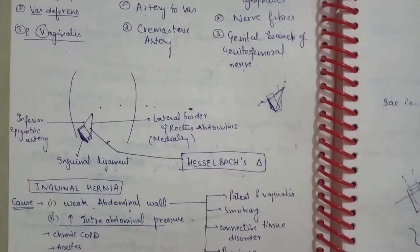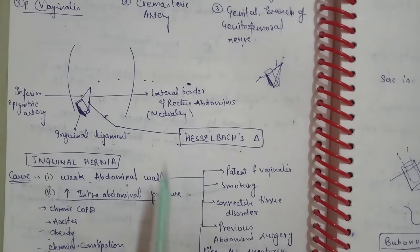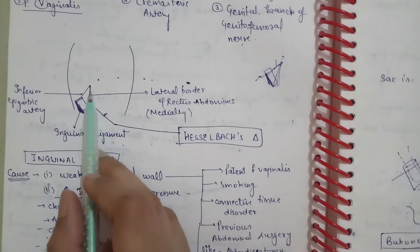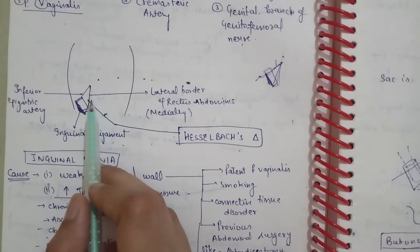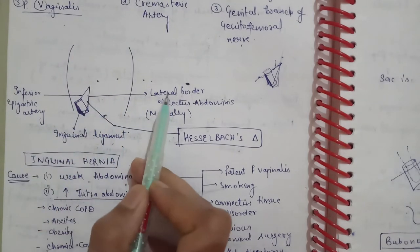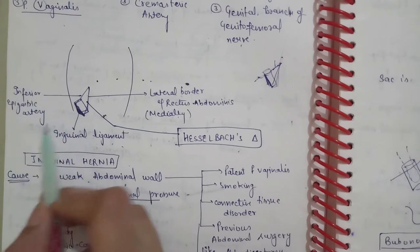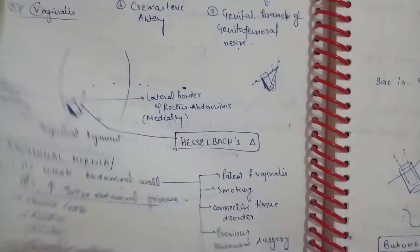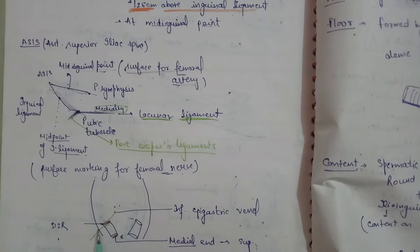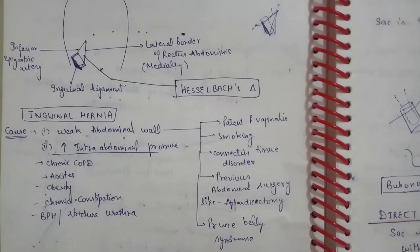Now let's talk about Hesselbach's triangle. Its boundaries are: the medial border is the rectus abdominis, the lateral border is the inferior epigastric artery, and the inferior border is the inguinal ligament. You can see the deep inguinal ring with the inferior epigastric vessels as the lateral border, and the rectus abdominis and inguinal ligament complete the triangle. This is the weak area of the abdominal wall.